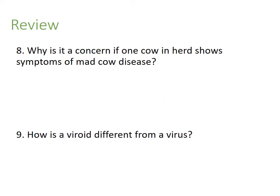Why is it a concern if one cow in a herd shows symptoms of mad cow disease? It's a problem because we don't know how it's passed on, there's no known cure, and there's no good way to sanitize equipment. How is a viroid different from a virus? Viruses can infect all kinds of different organisms, but we've only found viroids infecting plants. Also, viruses have a capsid, whereas viroids are just a negative RNA strand without a capsid.